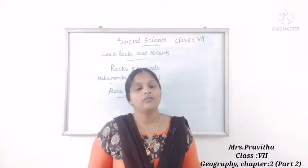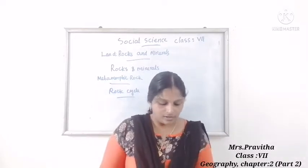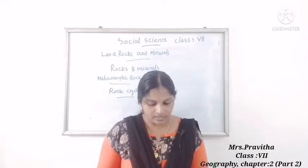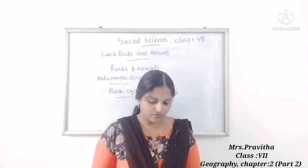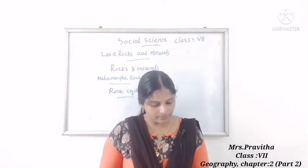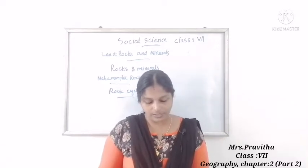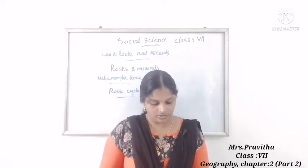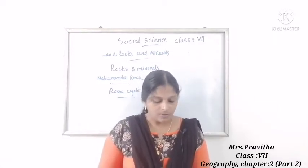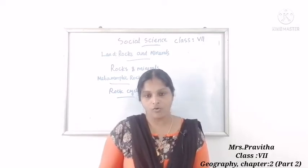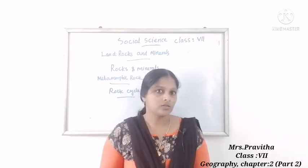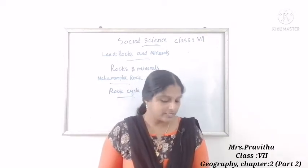Now take your textbook and turn to page 124 for the textual exercise. First section — fill in the blanks. The crust is the thinnest layer of the earth. The core has a molten outer layer. Metals are found in minerals present in the rocks. Metamorphic rocks arise from the change in form of existing rocks. Slate is an example of a metamorphic rock.